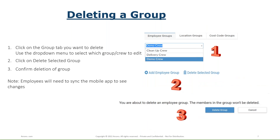Deleting a group is very simple. Click on the group you want to delete, hit the Delete Group button, and confirm the deletion. Just be aware that the employees or locations are not deleted from the system — they are just deleted from that group. So if I delete a location group, I'll still see those locations under Manage > Locations. Deleting a group only deletes that particular group, not the underlying records.